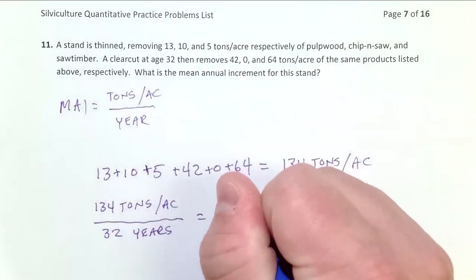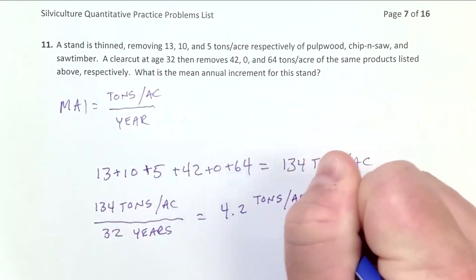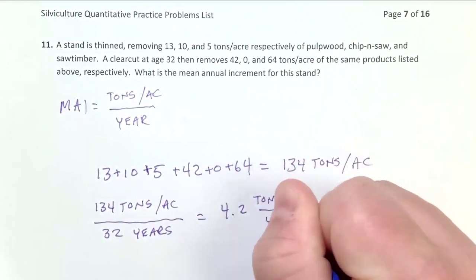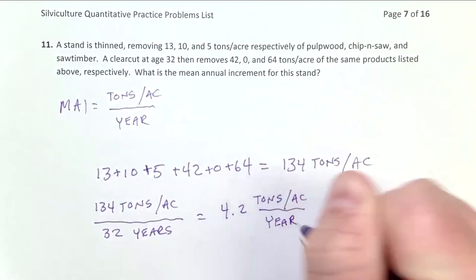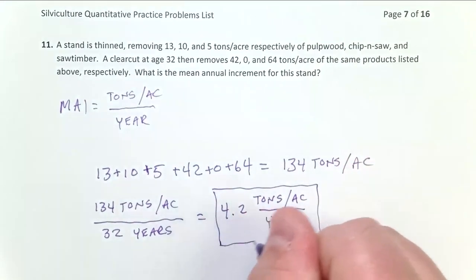And this gives me a number of 4.2 tons per acre per year. Pretty straightforward. Hopefully you can see how the units make sense of it. If you remember the units on mean annual increment, it makes this problem very easy.